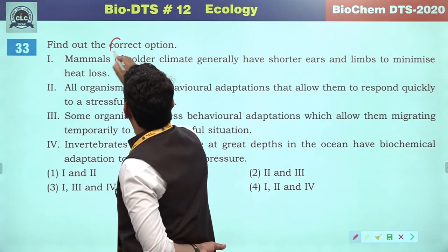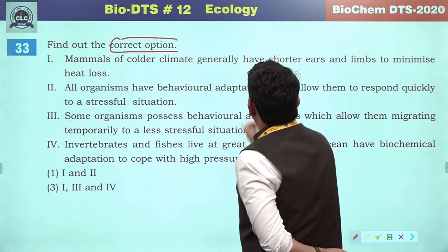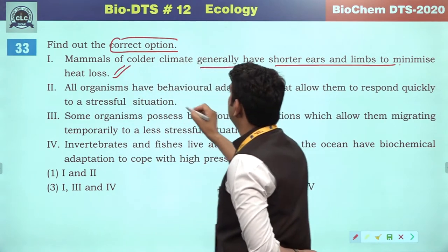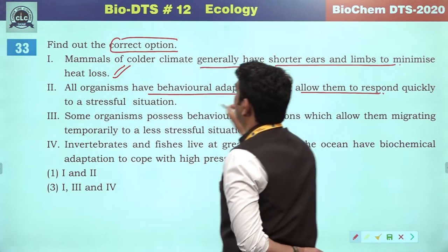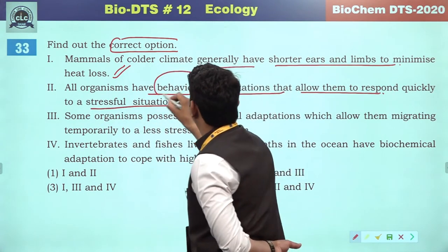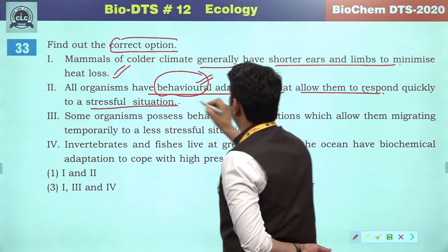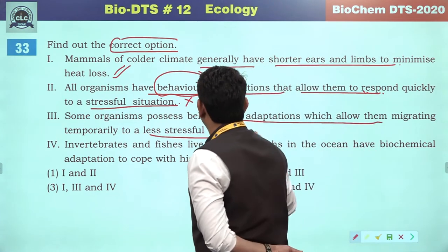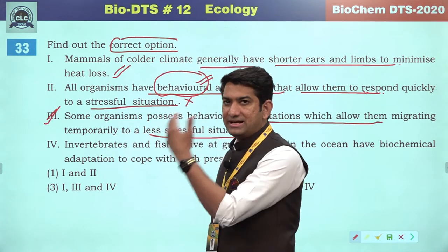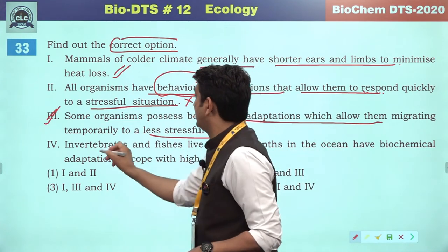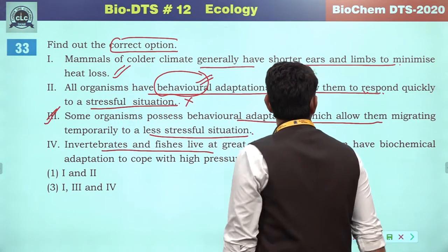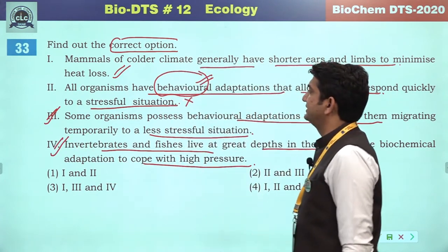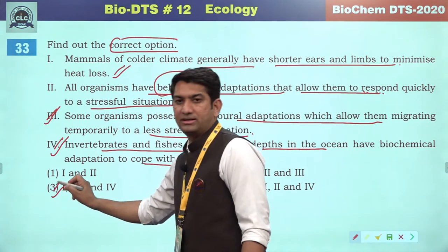Find out the correct option. Mammals of colder climatic zones generally have shorter ears and limbs to minimize heat loss — correct. Not all organisms have behavioral adaptations that allow them to respond quickly to stressful situations — this is incorrect. Some organisms possess behavioral adaptation which allows them to migrate temporarily to less stressful conditions — correct. Invertebrates and fishes living in great depths of oceans have biochemical adaptations to cope with high pressure — correct. So the correct references are first, third and fourth — the third will be the correct answer.